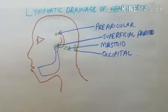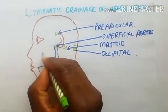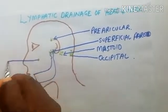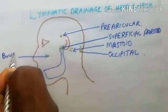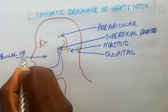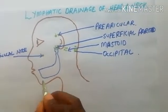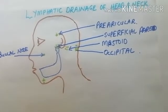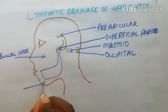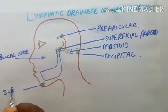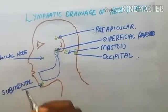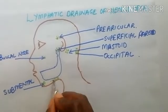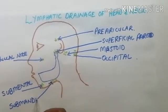Here in front we have usually one lymph node found in the buccal fat pad — we call it the buccal lymph node. There is also a group here which are the submental group of lymph nodes, and then just below the lower border of the mandible we have a group called the submandibular lymph nodes.